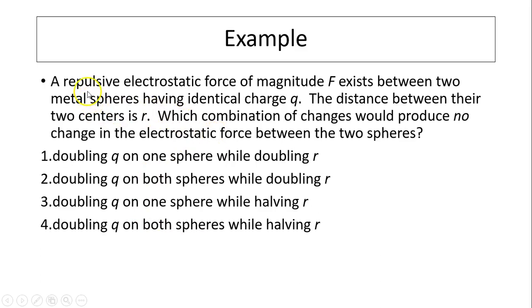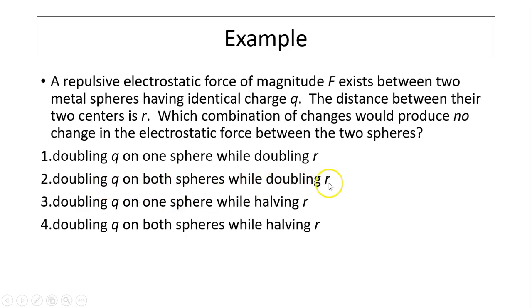A repulsive electric force of magnitude F exists between two metal spheres with identical charge Q, with center-to-center distance R. Which combination would produce no change in the electrostatic force? Doubling Q on one sphere while doubling R would not work. Doubling Q on both spheres while doubling R: 2 times 2 divided by 2 squared gives you 1 — no change. So the answer is 2.